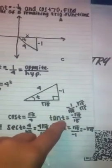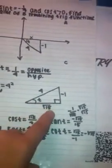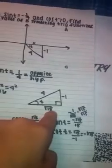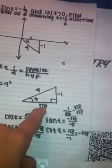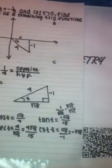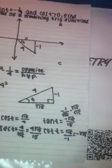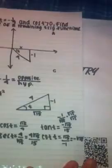Now we need to find the tangent. The tangent is opposite over adjacent: the opposite side is negative 1 and the adjacent side is square root of 15, so tangent equals negative 1 over square root of 15. Since we cannot have a radical in the denominator, we multiply top and bottom by square root of 15 to get negative square root of 15 over 15.